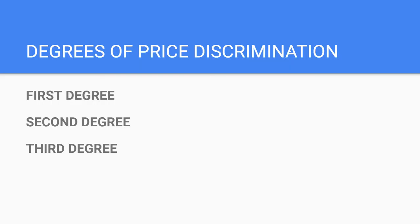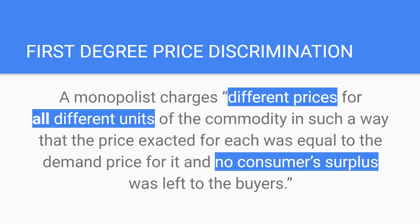There are three degrees of price discrimination. The previous diagram we saw was the third degree discrimination. The first degree price discrimination is when a monopolist charges different prices for all different units of the commodity in such a way that the price exacted for each unit equals the demand price for it and no consumer surplus is left to the buyers.